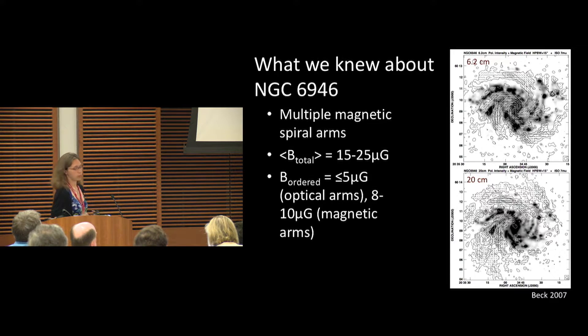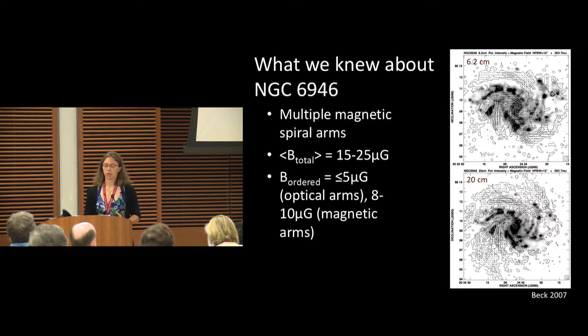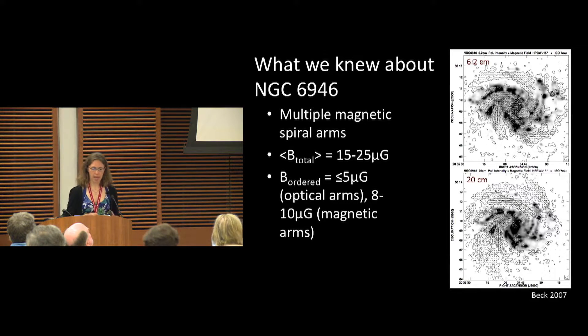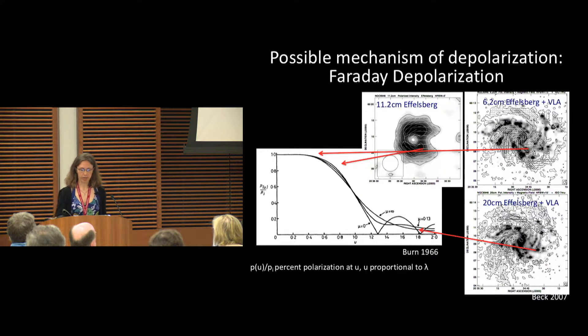Total magnetic field strength when you include all the non-thermal emission is 15 to 25 microgauss. But these ordered magnetic fields are on the order of about 10 microgauss when you look at these spiral arm magnetic arm structures.